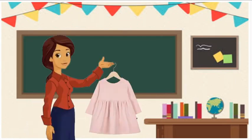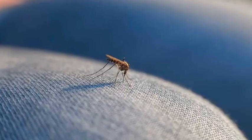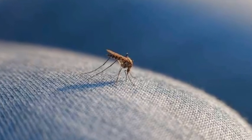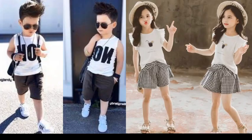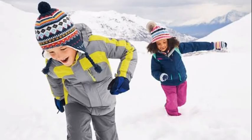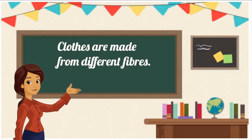Clothes protect us from heat, cold and rain. They also protect us from insects. We wear cotton clothes in summer and woolen clothes in winter — thick clothes to protect you from cold.